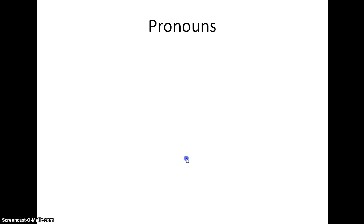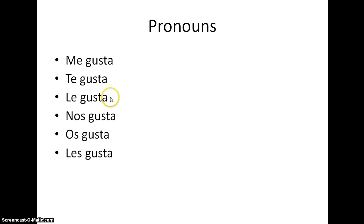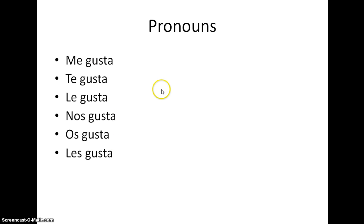So what are the pronouns? Me gusta, te gusta, le gusta, nos gusta, os gusta, les gusta. You can see all the verb endings don't change at all because it's still the IT form — I like it, you like it, he/she/it likes it, we like it, you (plural) like it, they like it. They only change if the thing at the end is plural — so we'd put an N on the end if everything being liked is plural.